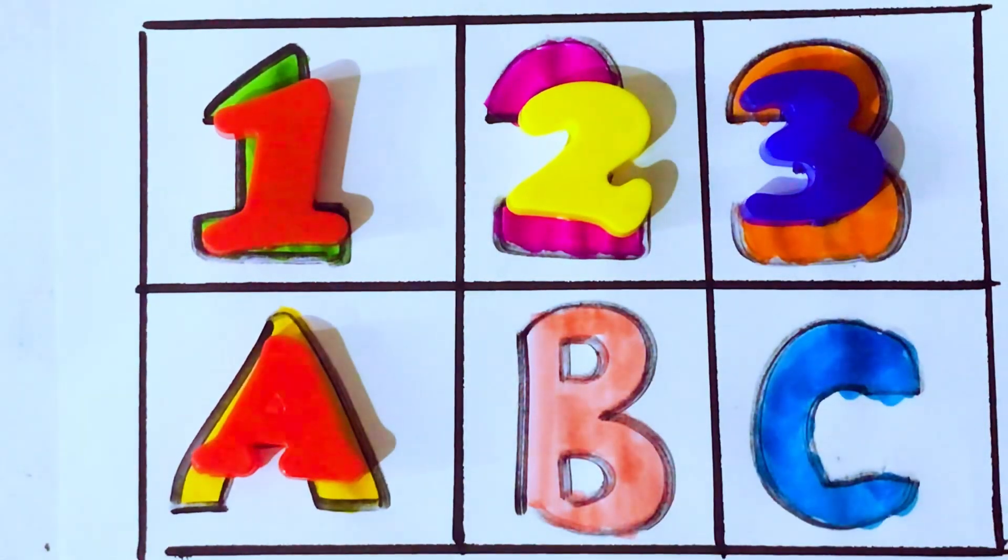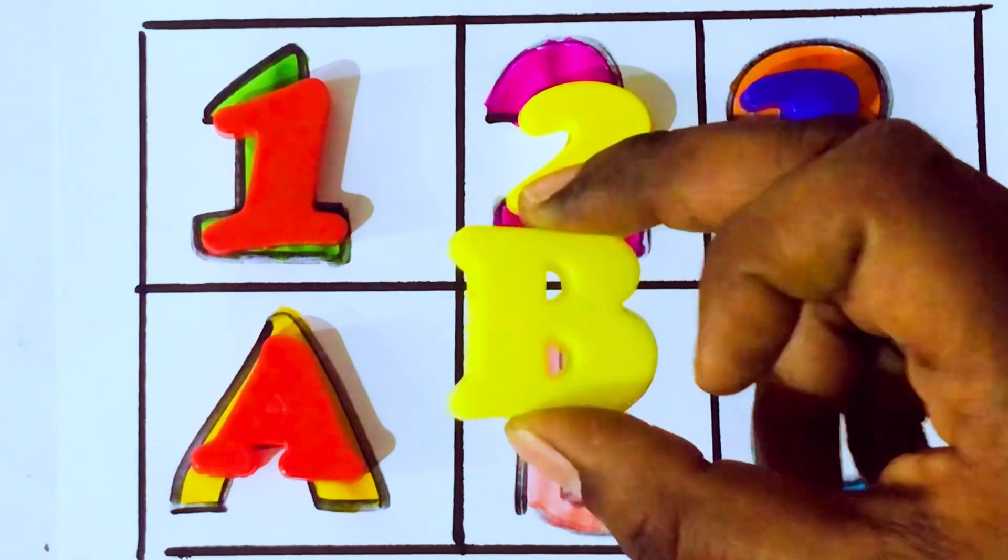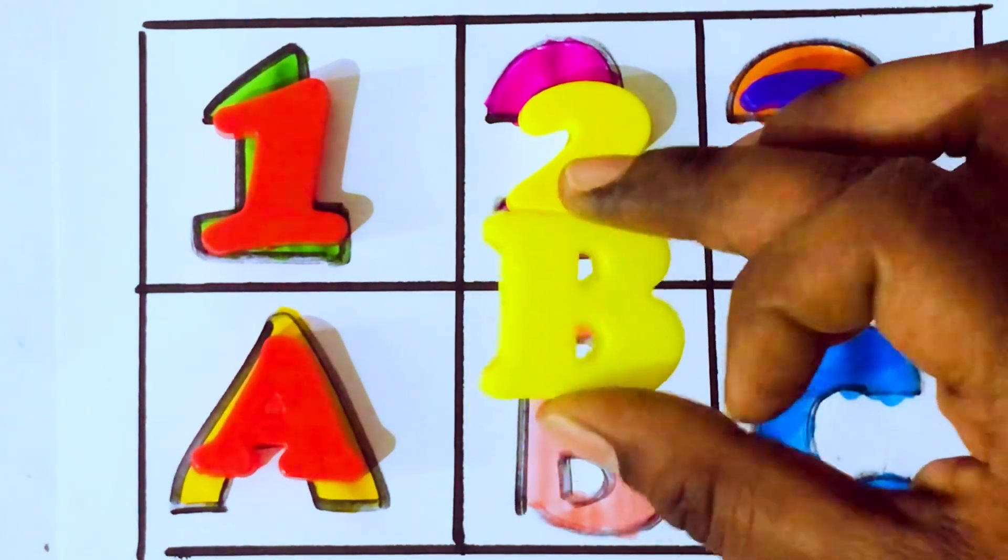A after B. B for Ball. Which letter kids? B. B for Ball. B, A, L, L.